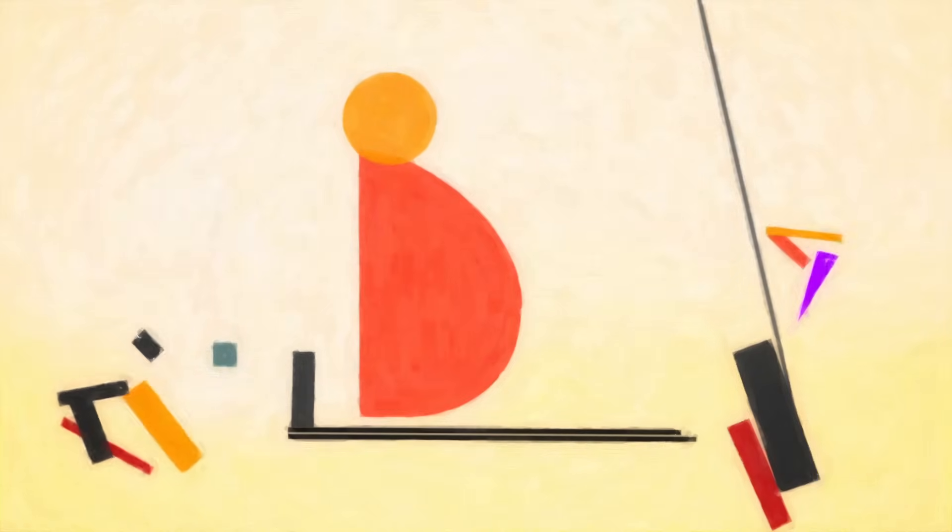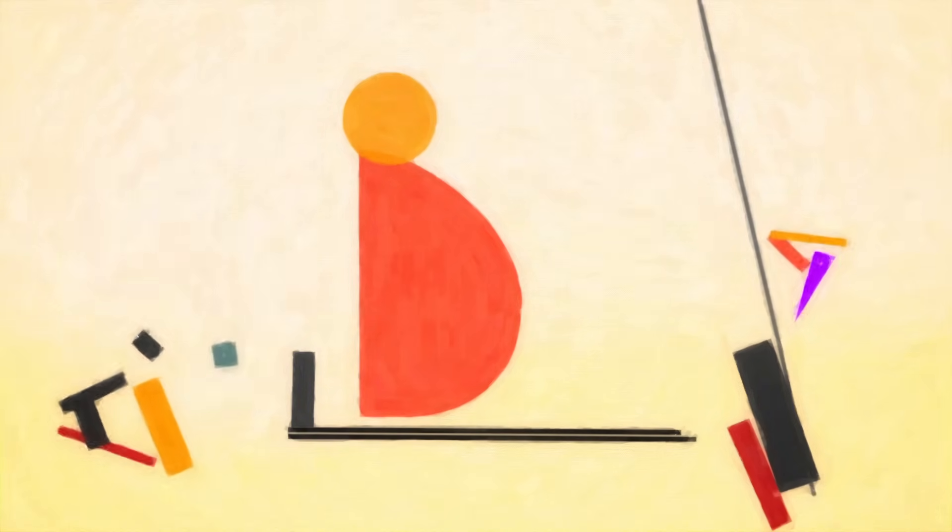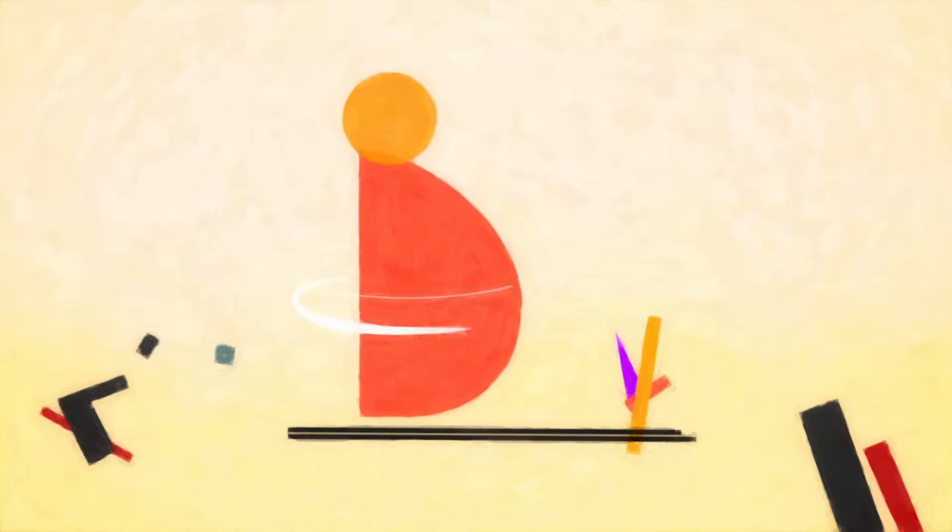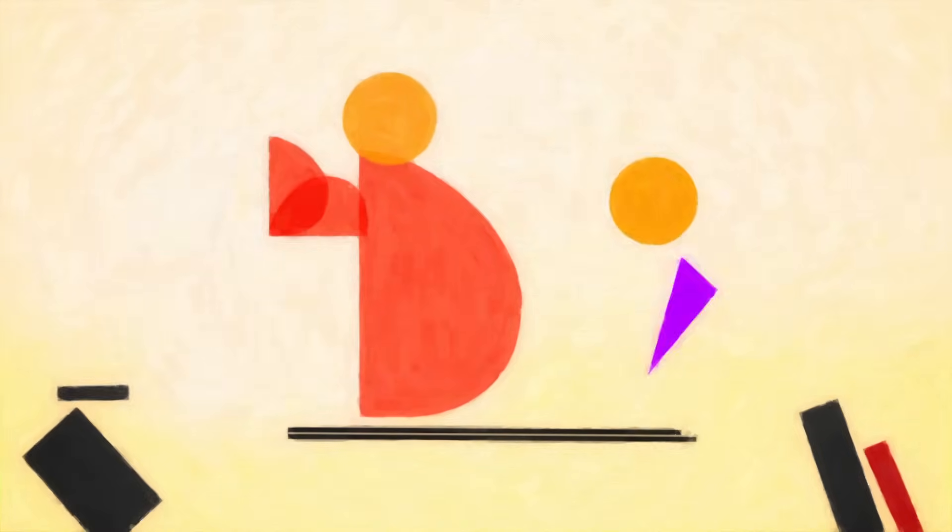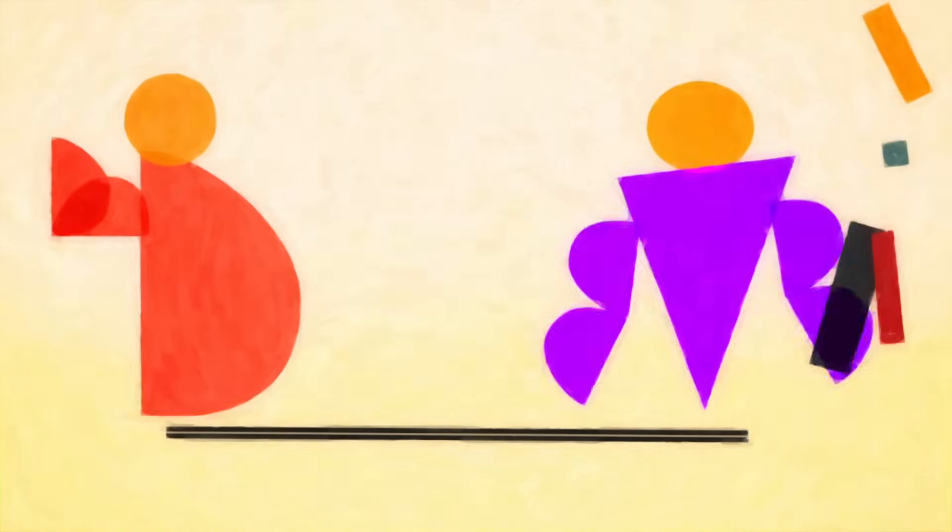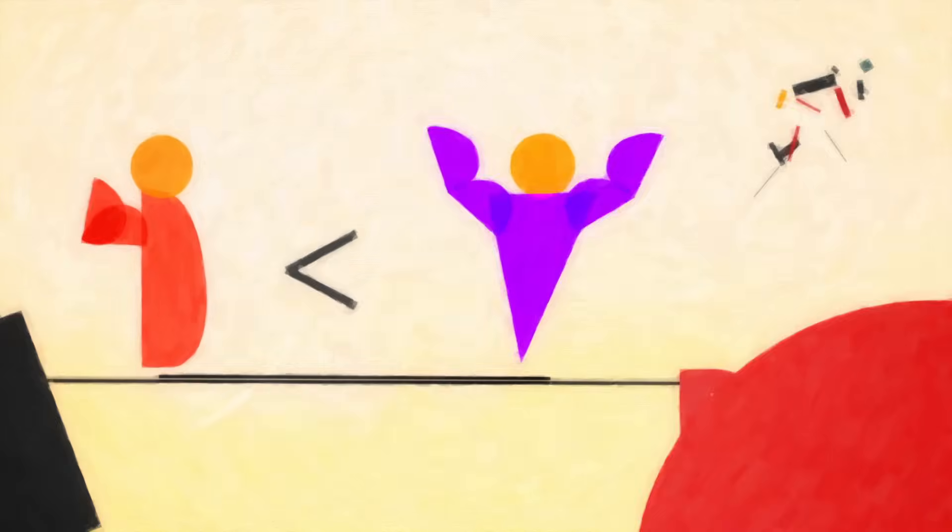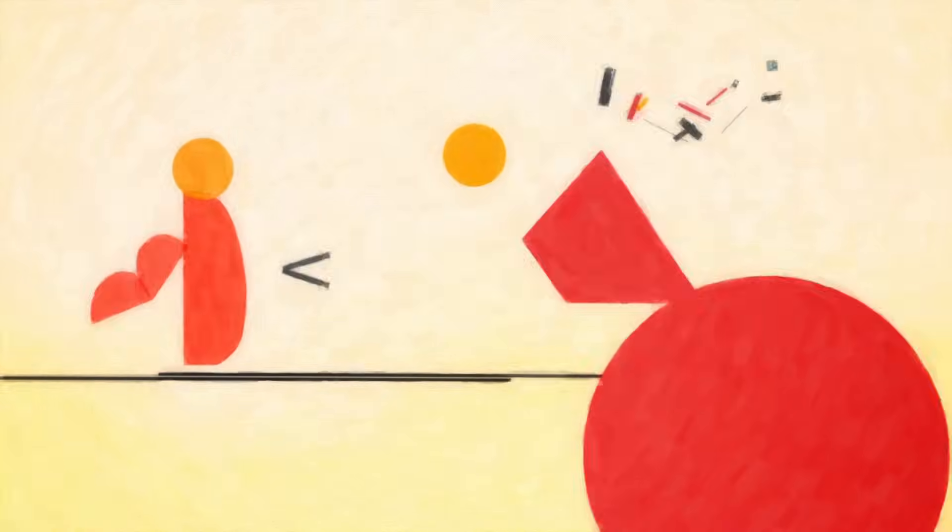While BMI can be a helpful estimate of healthy weight, actual body fat percentage can only really be determined by also considering information like waist circumference and muscle mass. Athletes, for instance, have a naturally higher BMI. So how does a person become obese?